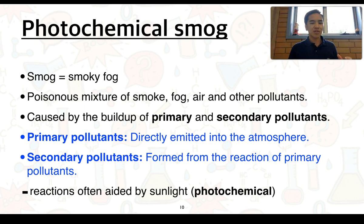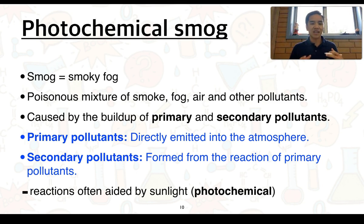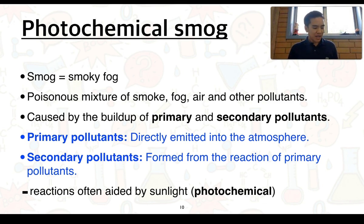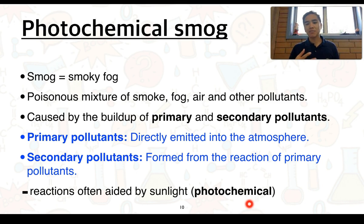What is photochemical smog? The word smog is a combination of two words — essentially means smoky fog. More precisely, it's a poisonous mixture of smoke, which is mostly particulate matter, fog, air, and other pollutants. It's caused by the build-up of primary and secondary pollutants. Primary pollutants are directly emitted into the atmosphere through natural and anthropogenic processes. Secondary pollutants are formed from reactions of primary pollutants, and many of these reactions can be aided by sunlight — that's the photochemical part, meaning chemical change in the presence of light.